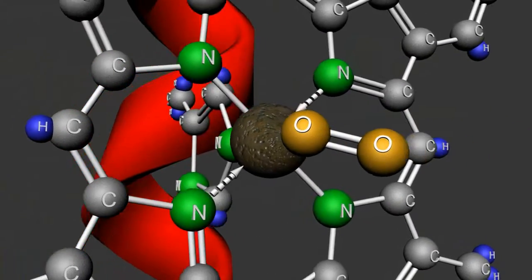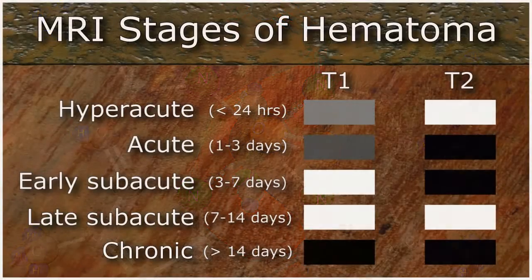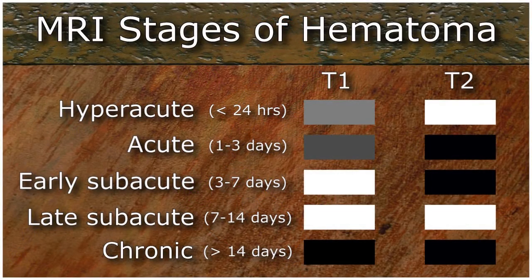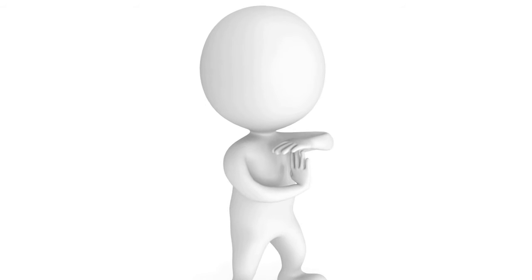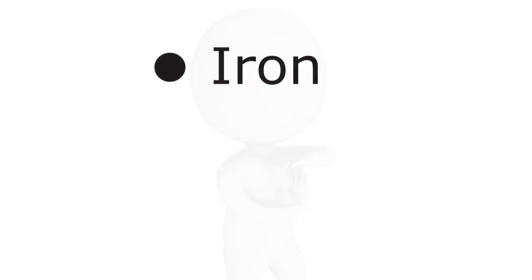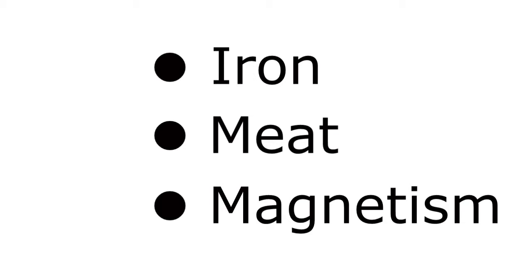This leaves one coordinate site open, which is where most of the action actually takes place — the oxygen-carrying portion of the heme molecule, forming a temporary dative coordinate covalent bond with O2. With the completed molecule, we can now dive into the MR characteristics of the various forms of hemoglobin. For clarity, I want to take a quick moment to review some interesting features of iron, meat, and magnetism that are all relevant to our discussion.